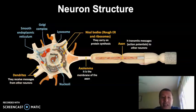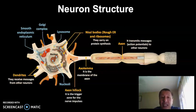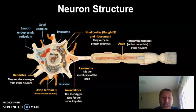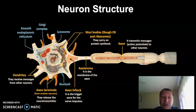The myelin sheath is the membrane that wraps around the axon. The axon hillock is the area where the action potential is going to start. The axon terminals from other neurons are going to be in contact with this neuron that you have on screen. They are going to be releasing neurotransmitters.